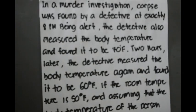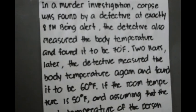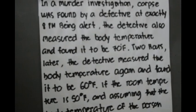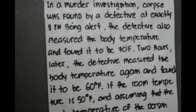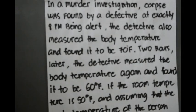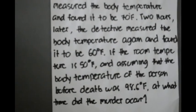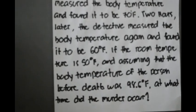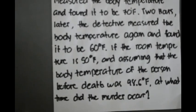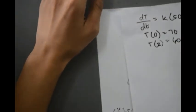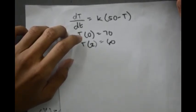In a murder investigation, a corpse was found by a detective at exactly 8 p.m. The detective measured the body temperature and it was 70 degrees Fahrenheit. Two hours later, the detective measured the body temperature again and found it to be 60 degrees Fahrenheit. If the room temperature is 50 degrees Fahrenheit and the body temperature before death was 98.6 degrees Fahrenheit, at what time did the murder occur? With time 0 taken to be 8 p.m., the boundary value problem is: dT/dt equals k times (50 minus T), T of 0 equals 70, and T of 2 equals 60.